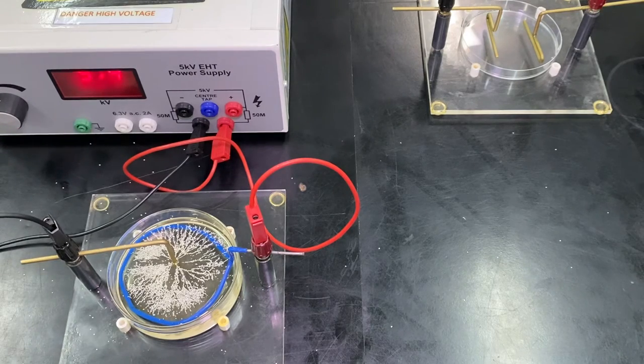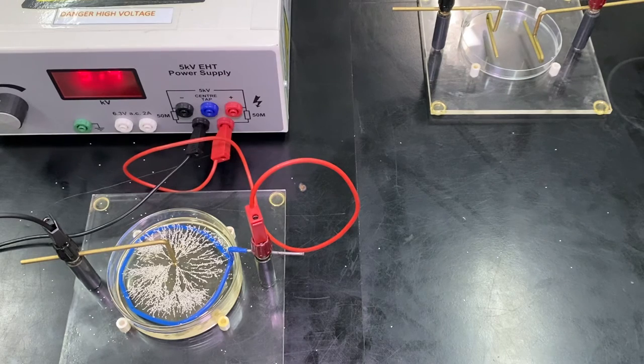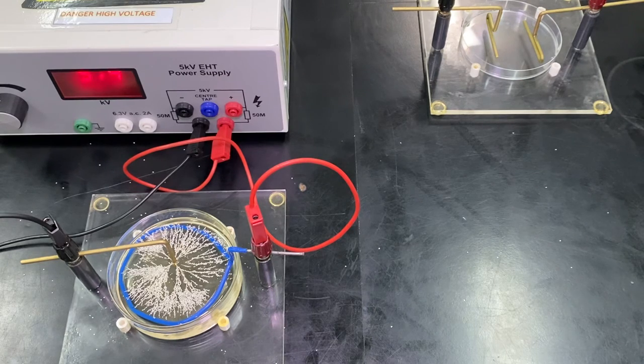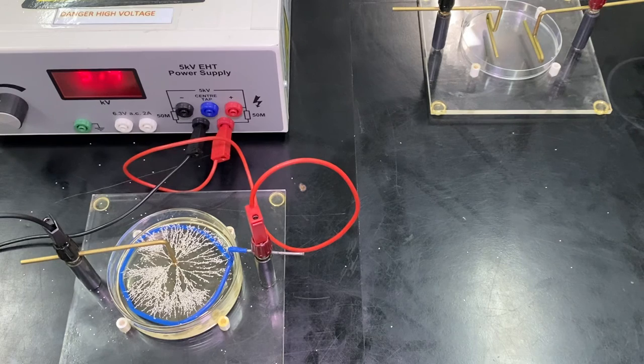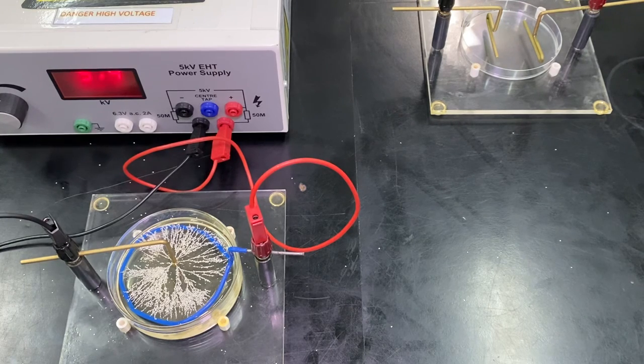just like the iron filings arrange themselves in a magnetic field along the lines of magnetic force, the little charged particles of semolina do the same in an electric field.